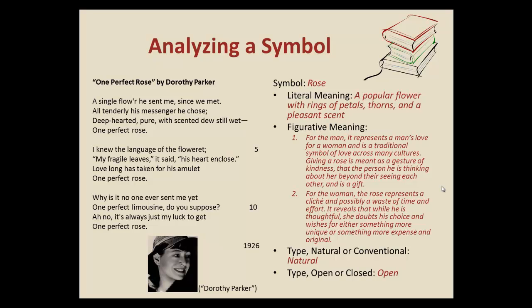So if we analyze it in accordance with all these pieces put together: the symbol, if you couldn't guess by the title and by the repetition throughout, is the rose — one perfect rose. You could actually look at that entire phrase and analyze it, but I'm going to choose to use the word rose. Literally, a rose is a popular flower with petals in beautiful rings folded into one another. The stems have thorns, making them a bittersweet type of gift, but with a very pleasant fragrance.